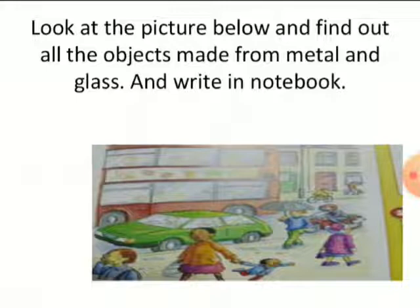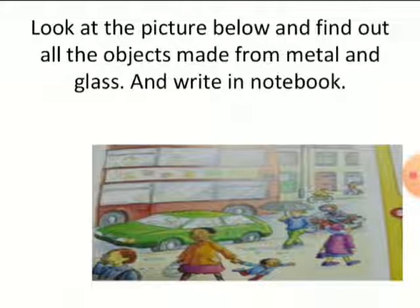Now turn to page number 55 and find out all the objects that are made from metal and glass. Metal is hard and unbreakable, and it is found in nature and further made into useful things. After looking at this picture, list the things in your notebook — use your sense of sight to find all the objects made up of metal and glass.